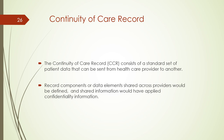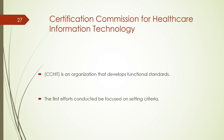Continuity of care record consists of a standard set of patient data — you had this particular problem, you were provided this medicine, now the problem is gone or reduced and you're being prescribed a lower dosage. The CCHIT is an organization that certifies EHRs. You don't want to buy EHRs that cost a lot of money and aren't certified by anybody.